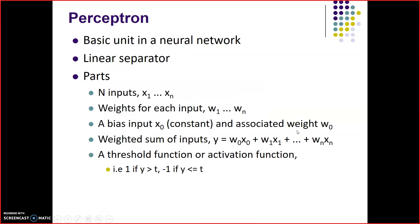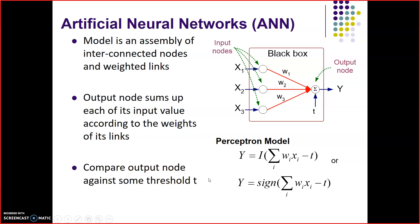A perceptron is the basic unit in artificial neural networks. It is a linear separator. It has n inputs, Wn weights, a bias input x0, and a weighted sum y. Weighted sum y is equal to W0*x0 plus W1*x1 up to Wn*xn. And an activation function: output is 1 if y is greater than t, and minus 1 if y is less than or equal to t.